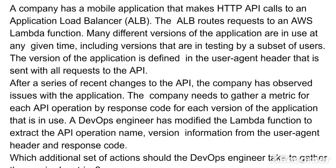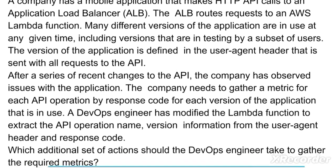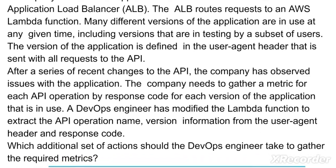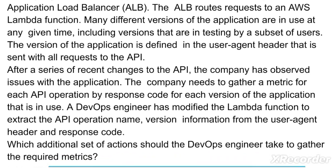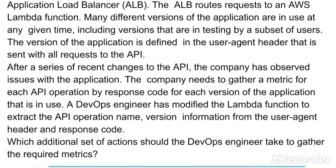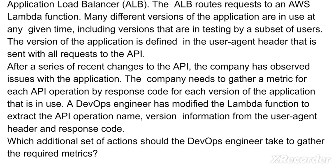A DevOps engineer has modified the Lambda function to extract the API operation name, version information from the user-agent header, and response code. The question is: which additional set of actions should the DevOps engineer take to gather the required metrics?